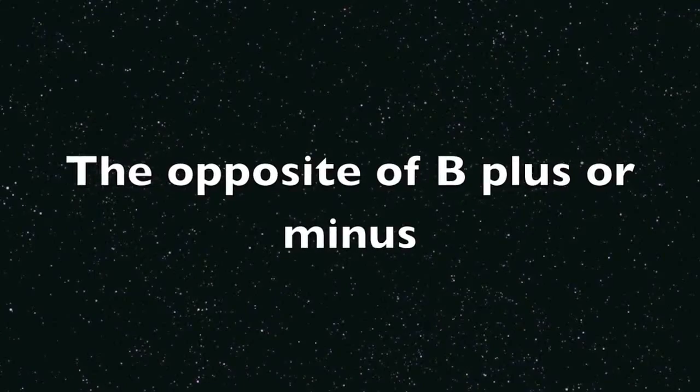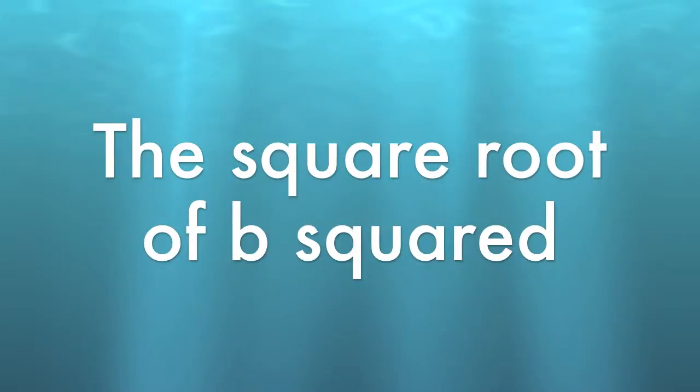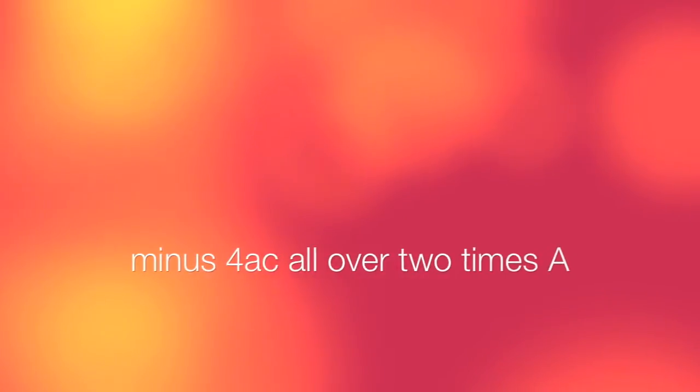The opposite of B plus or minus the square root of B squared minus 4AC, put it all together over 2A. Then you know what the X's will say.